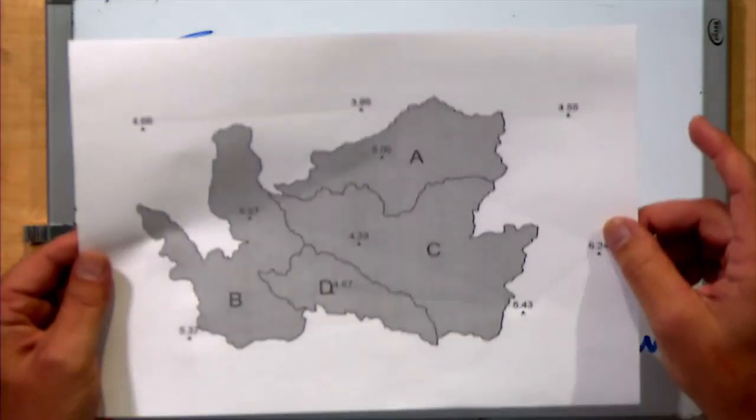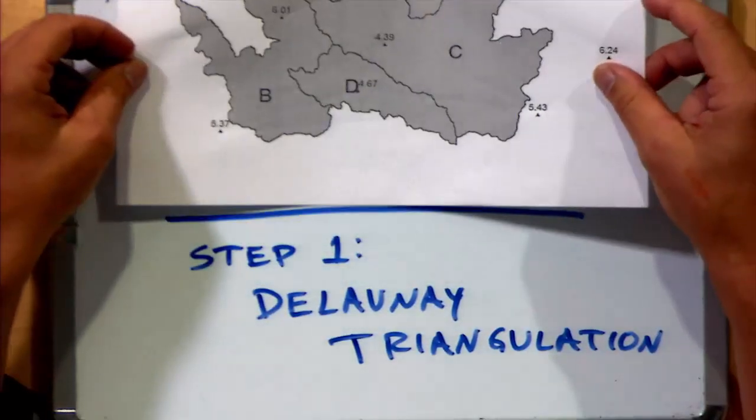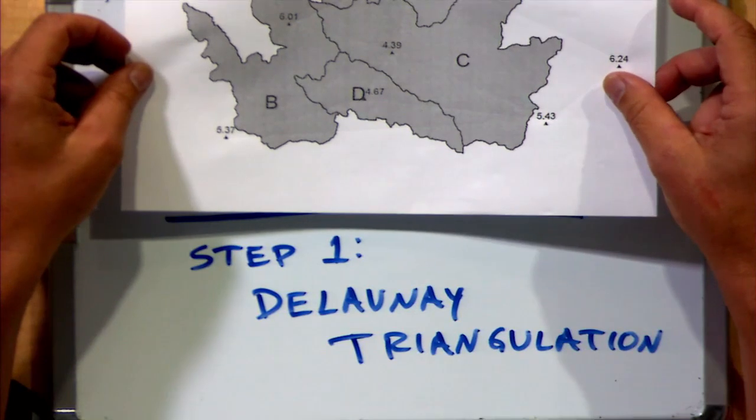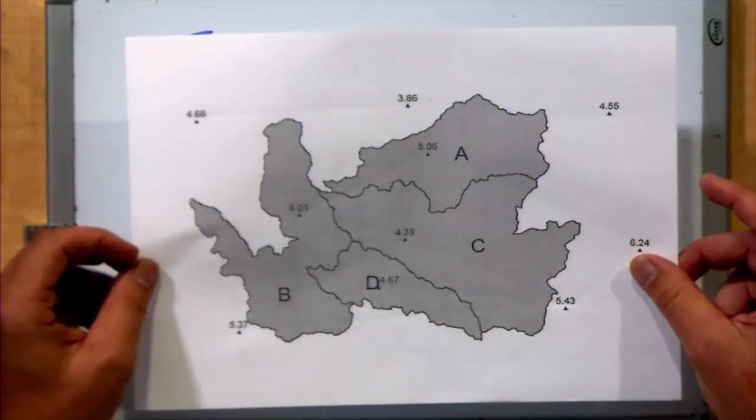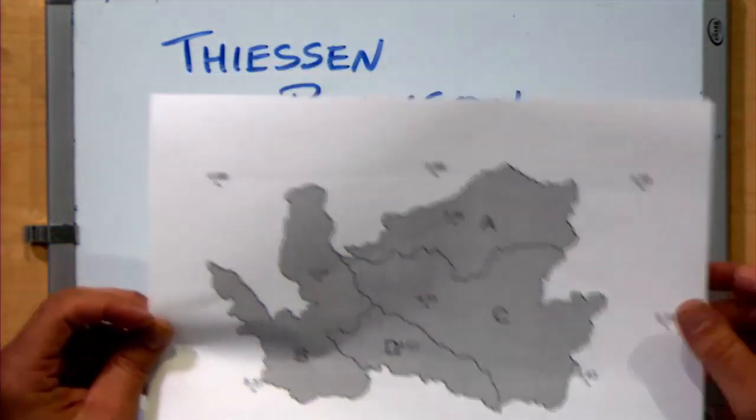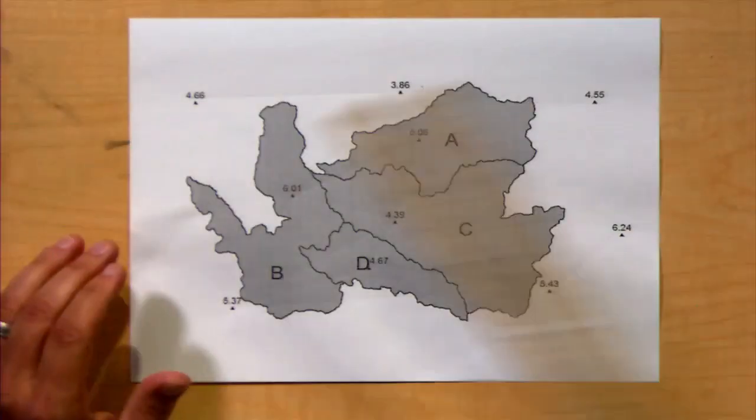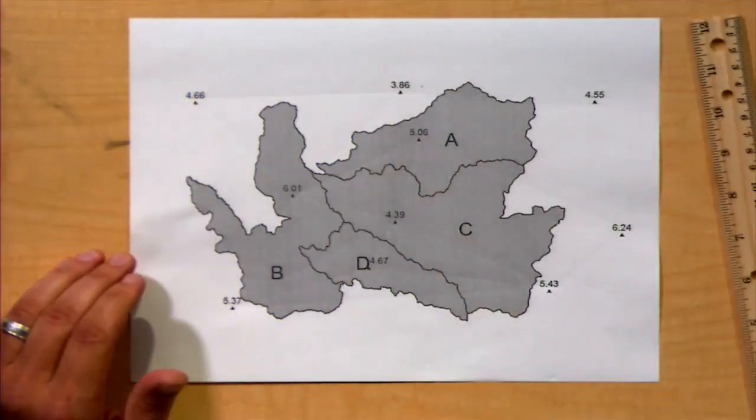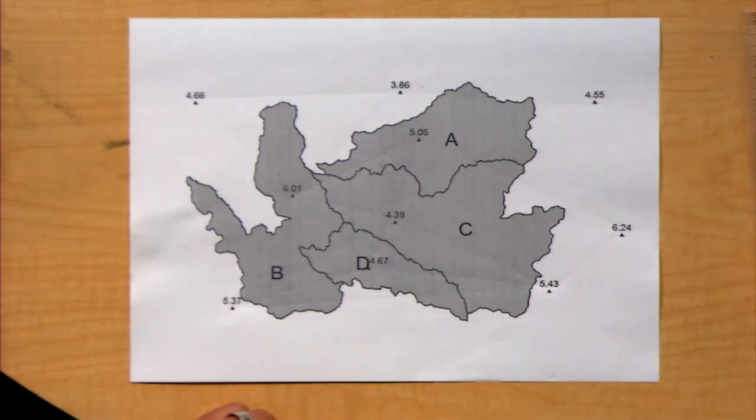The first step of this method is to take this data and create a series of what are called Delaunay Triangles. We're going to create a series of triangles here with this map. In order to do so, you're going to need a map of spatial data, and you will want a pencil and a straight edge. Here, I have a straight edge and a pencil. The first thing we want to do here, step one.